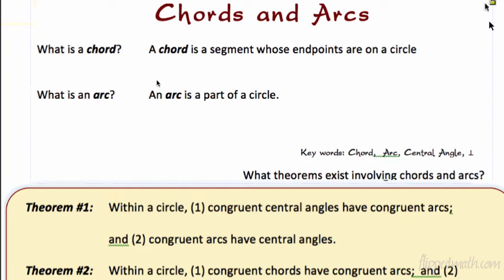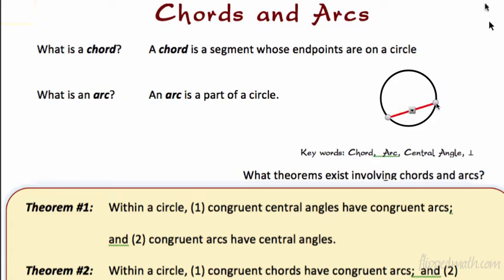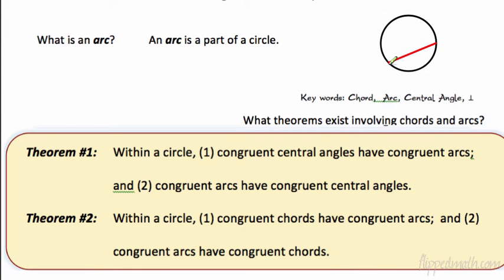Let's draw a picture. We have the circle, and we have the red line here — that is the chord. A chord is a segment whose endpoints are on a circle. So is the diameter a chord? Yes — it's a chord that goes through the middle. You have two endpoints on the circle. An arc is a piece of the circle — the highlighted curved part. If you cut a circle in two places, you'd be left with two arcs: a major one and a minor one.